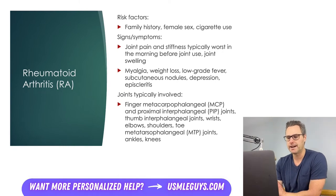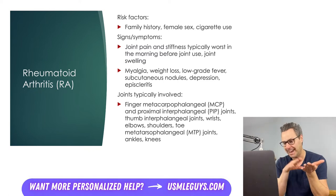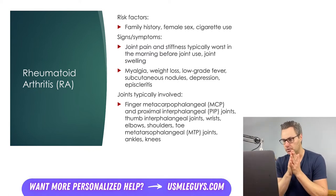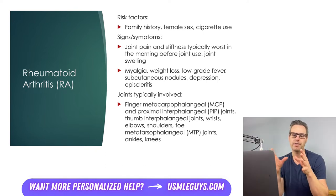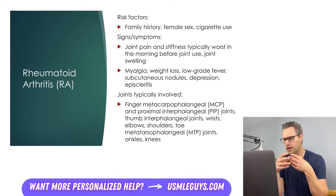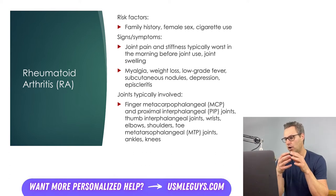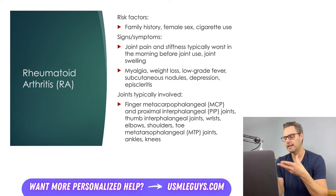Next up, we have rheumatoid arthritis, or RA. While OA is mechanical in nature, RA is a systemic inflammatory autoimmune disease leading to joint pain and destruction. Risk factors include a family history of RA, being female, and a history of cigarette use. Where OA joint pain worsens with use, in RA it is usually worse first thing in the morning and with long periods of inactivity — so activity can actually make it a little better.